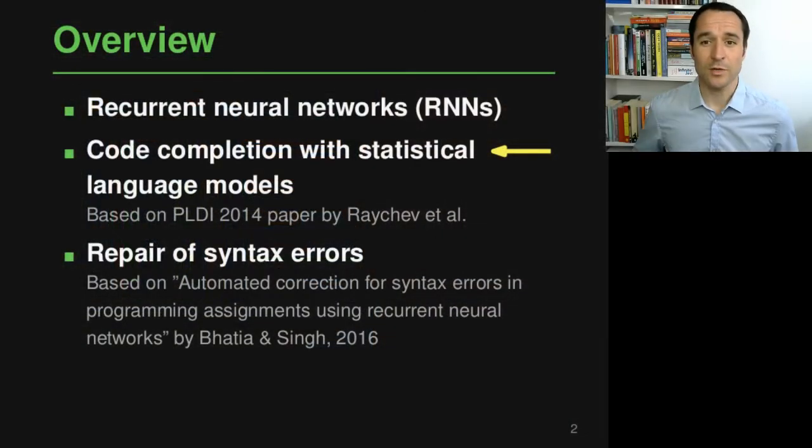Welcome back to Analyzing Software Using Deep Learning. We are in the second module about recurrent neural networks and how to use them for code completion and program repair. This is the second part, where we look into the first application of recurrent neural networks. In the first part we looked at how RNNs work in general, and now we look at one concrete application: code completion with statistical language models.